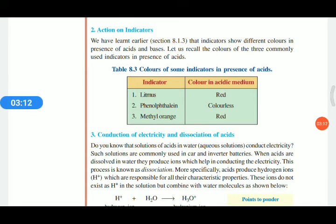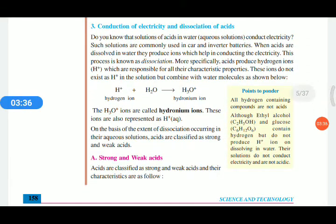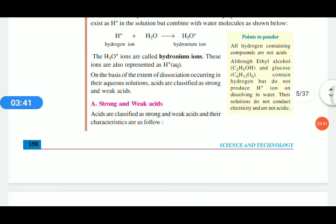Acid shows its property only when dissolved in water, and when dissolved in water it conducts electricity. When HCl is dissolved in water it separates into H⁺ and Cl⁻. Then the H⁺ joins water to form H₃O⁺, that is hydronium ions. These hydronium ions help in the conduction of electricity.